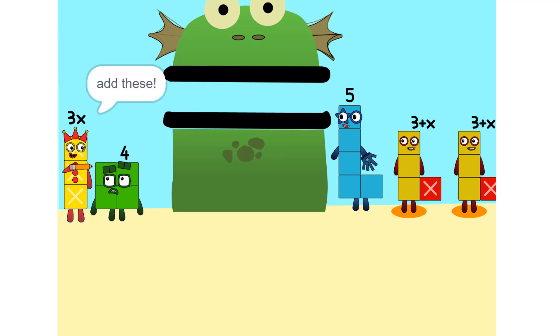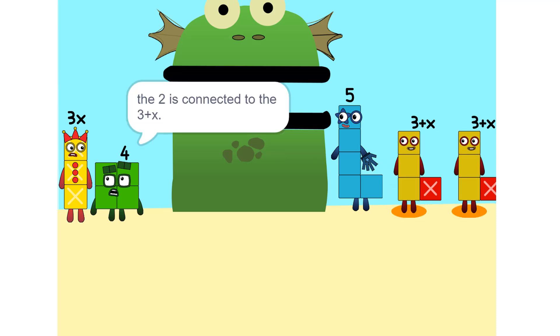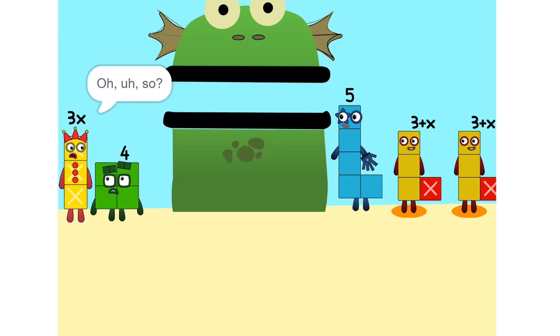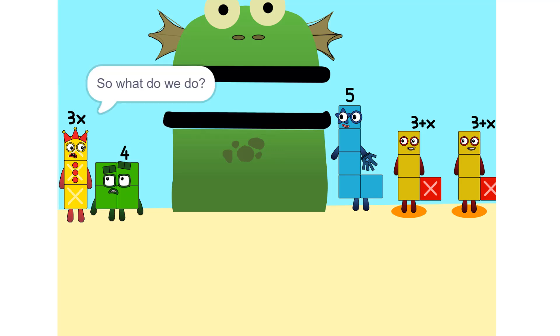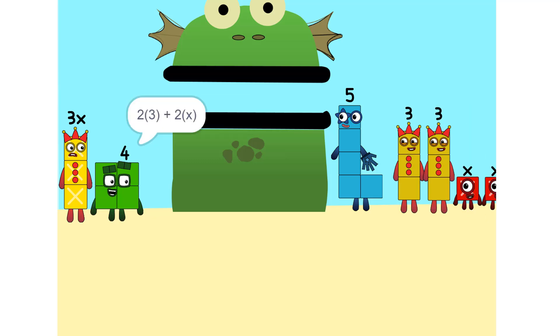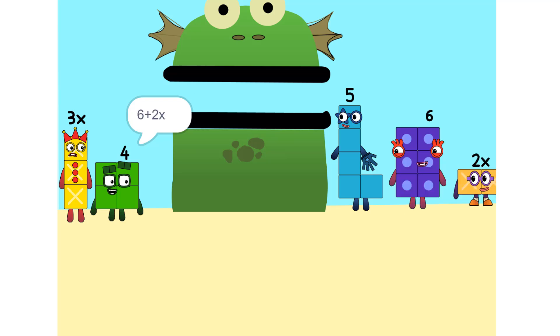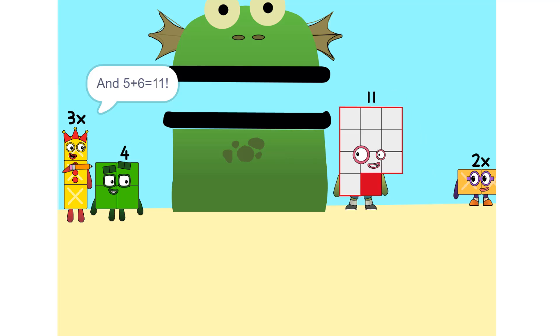I see something. We can add these. Why did that happen? Because the 2 is connected to the 3 plus X. So it's like adding apples and oranges. You can't. So what do we do? See the 2 times 3 plus X? That's the same as 2 times 3 plus 2 times X, which is 6 plus 2X. And 5 plus 6 is 11.